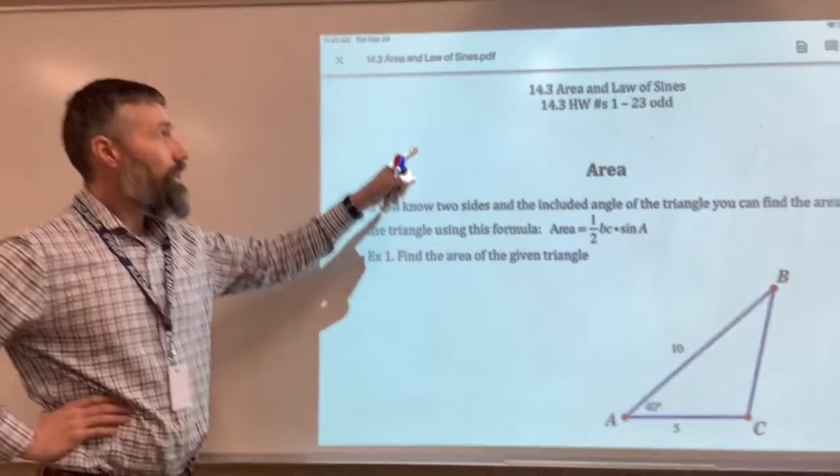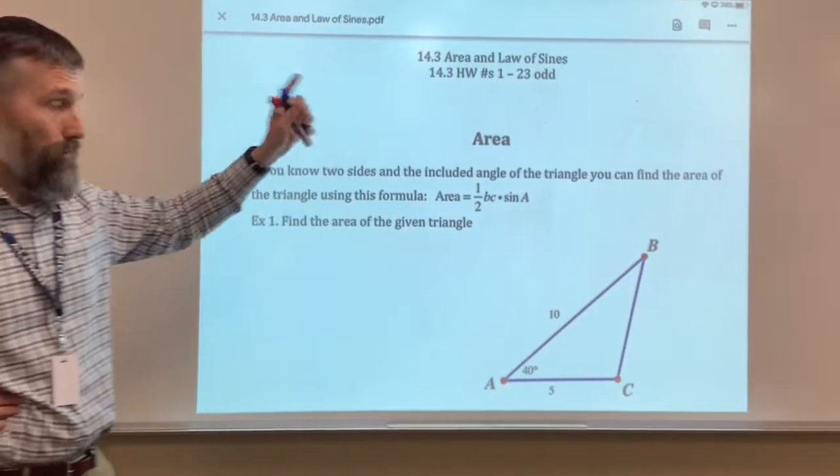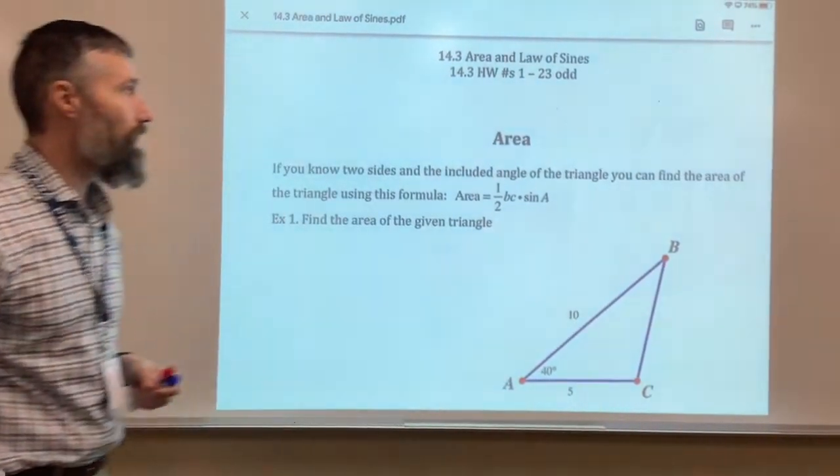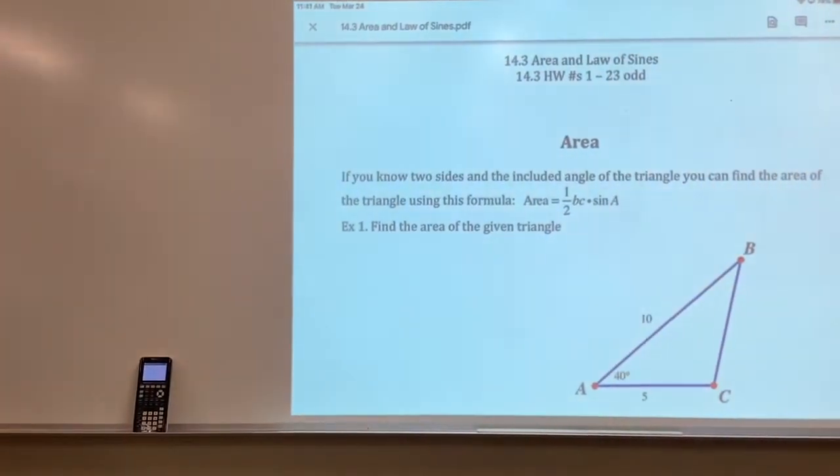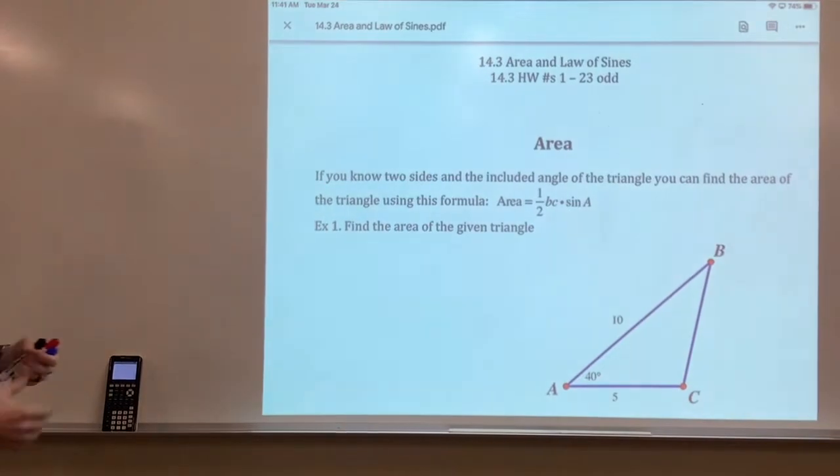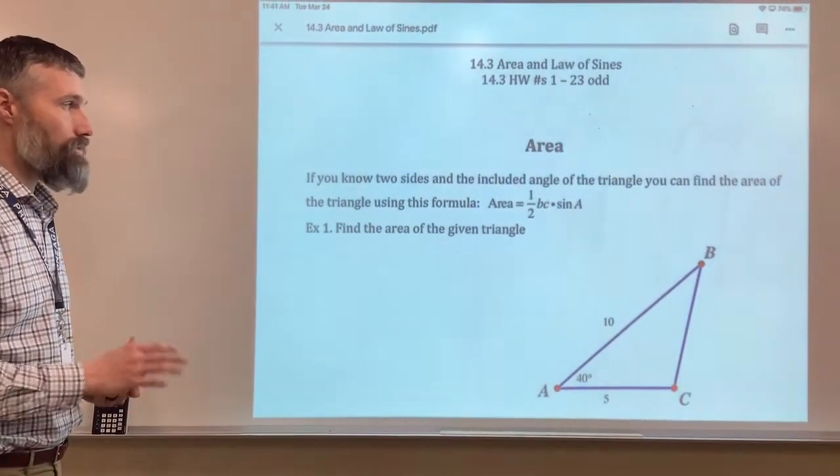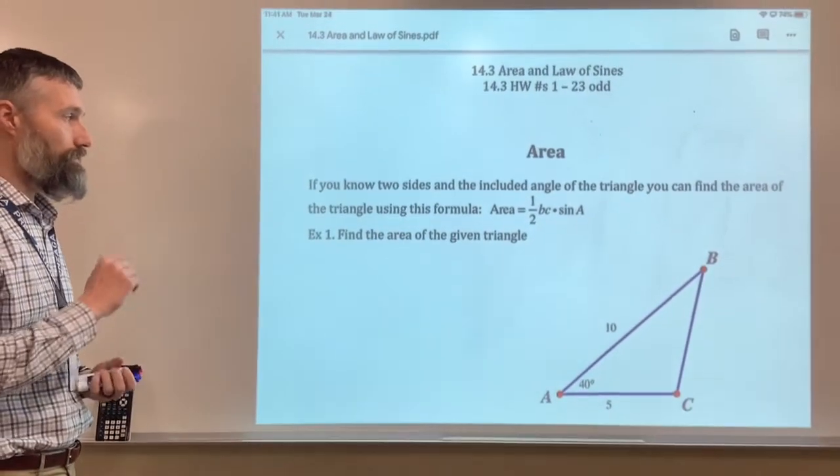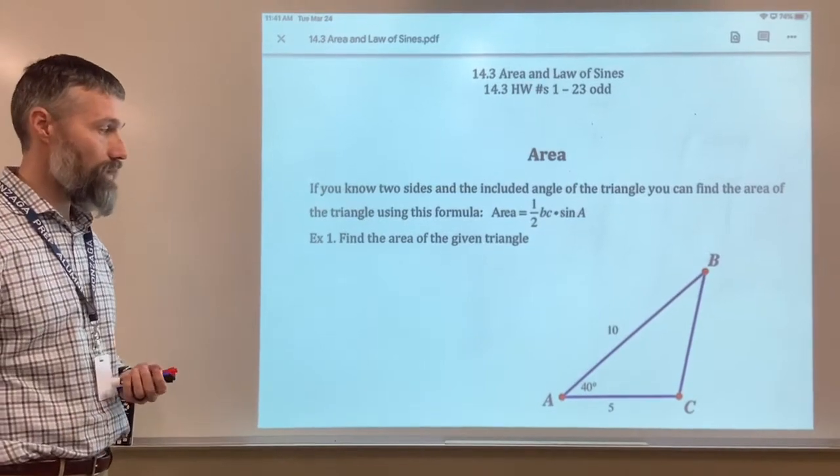All right, so today we're looking at 14.3. The homework's going to be posted. It's 1 through 23 odd on the attached PDF. So what we're starting out, this is the law of sines. We're also going to use the law of sines to find the area of a non-right triangle.